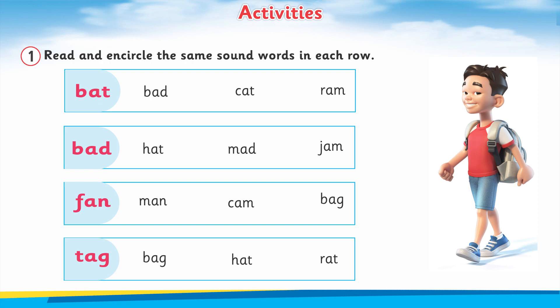The first activity: how you are going to conduct this in your class — when a student sees a new word like 'bad', students have to encircle the words which have the same sound as 'bad'. Motivate your students to do this work on their own.